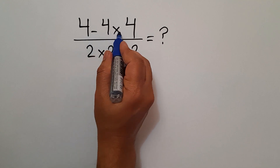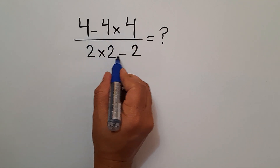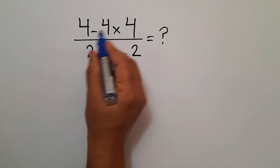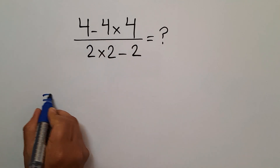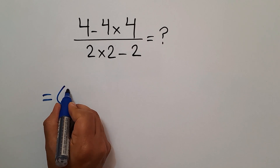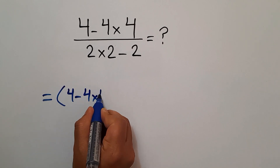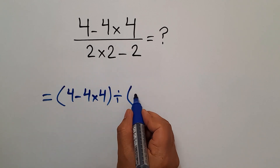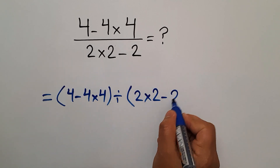4 minus 4 times 4 over 2 times 2 minus 2. Are you ready to solve? Let's go ahead and get started. Our fraction can be written as parentheses 4 minus 4 times 4, divided by parentheses 2 times 2 minus 2.